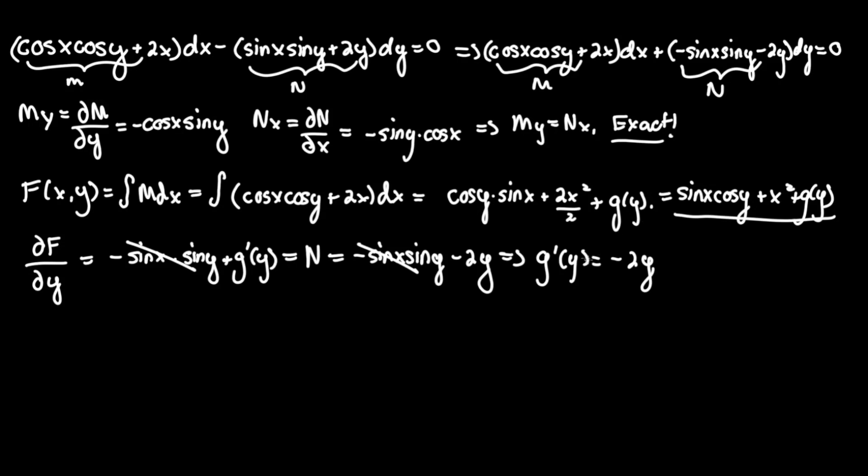But for the final answer we don't need g prime of y, we need g of y. So let's integrate this term, which would become, let's bring out the negative 2 in the front since it's a constant: negative 2 times the integral of y dy. This equals negative 2y squared over 2. And this simplifies to, let's write that over here, g of y therefore equals negative y squared.